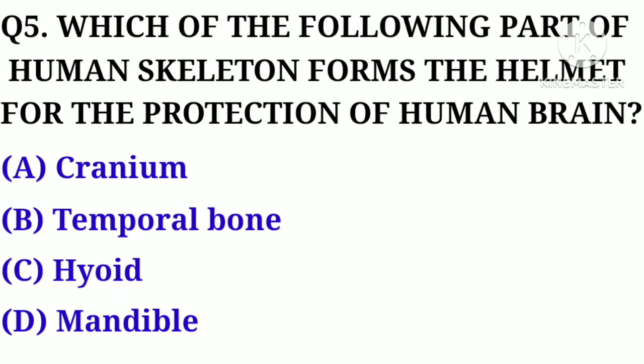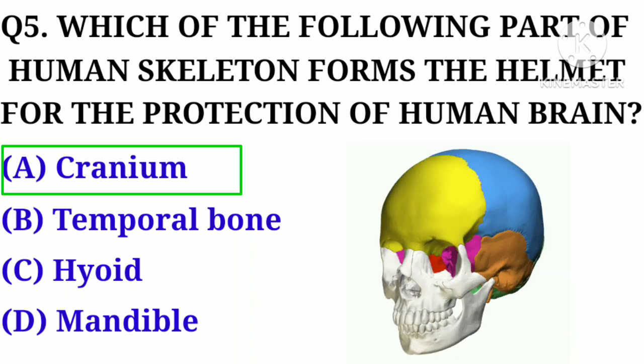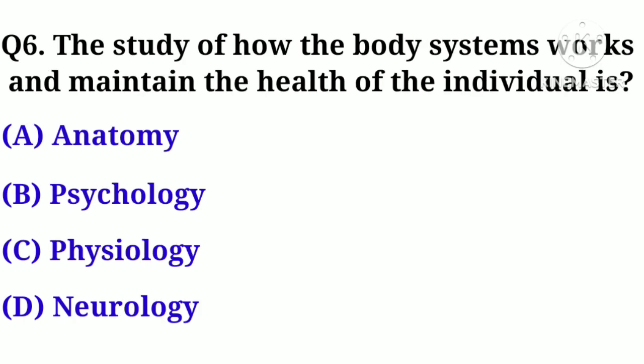Question number 5. Which of the following part of the human skeleton forms the helmet for the protection of the human brain? Option A. Cranium, B. Temporal Bone, C. Iod, D. Mandible. Correct answer: Option A. Cranium.